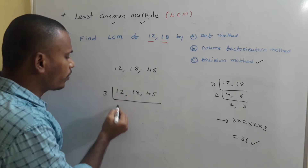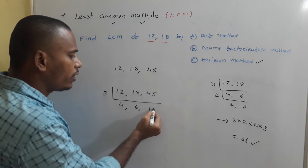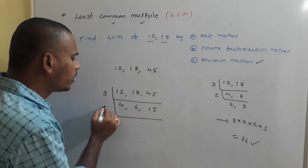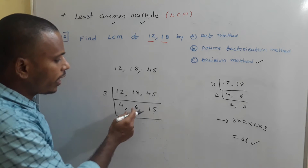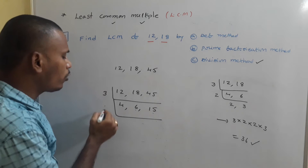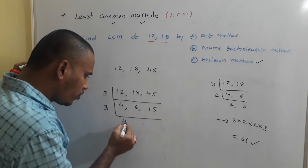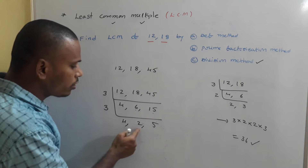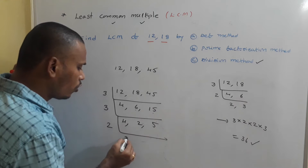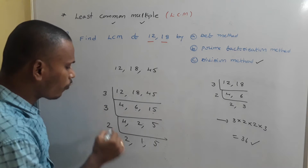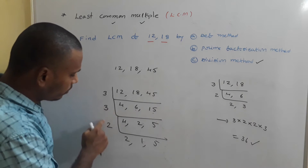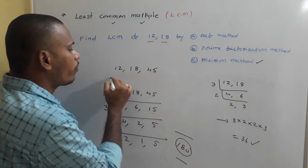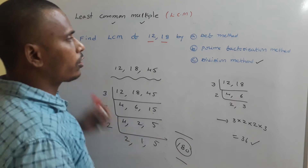Now we have 4, 6, 15. Use 3 again: 3 divides 6 to give 2 and 3 divides 15 to give 5, leaving 4 as is. Now we have 4, 2, 5. Use 2: 2 divides 4 to give 2 and 2 divides 2 to give 1, leaving 5. Now we have 2, 1, 5. The LCM is the product of all divisors and remaining numbers: 3 × 3 × 2 × 2 × 1 × 5 = 180. So LCM of 12, 18, and 45 is 180.